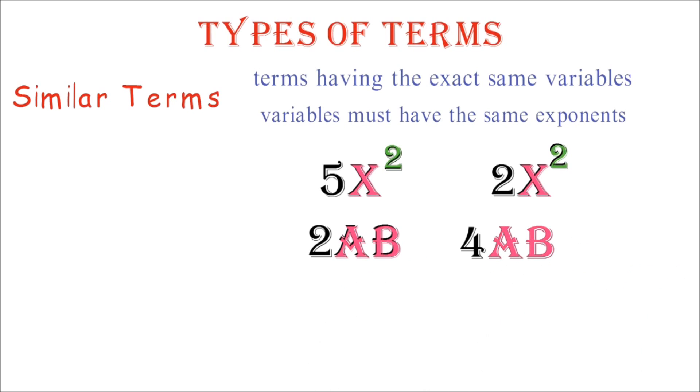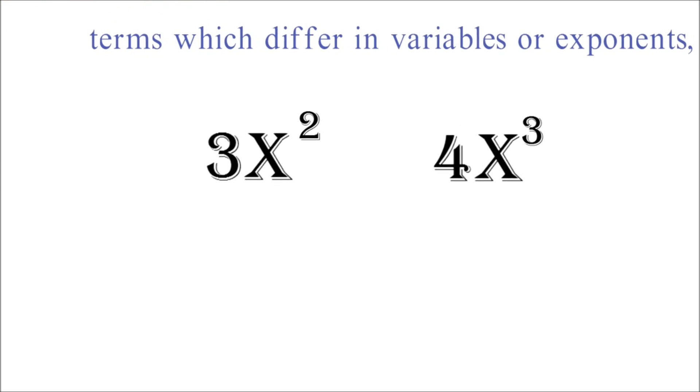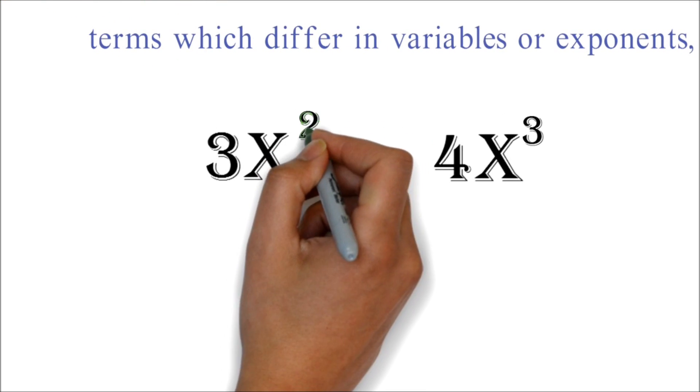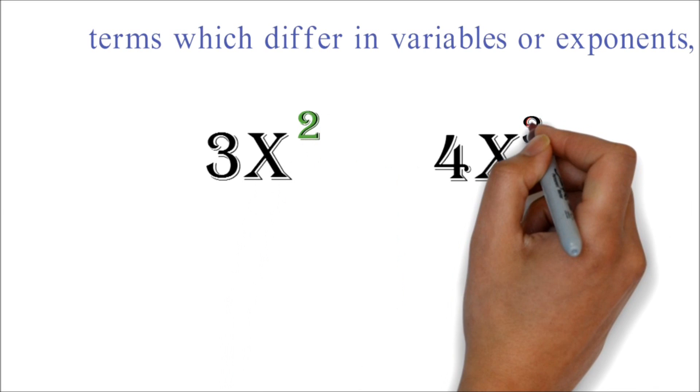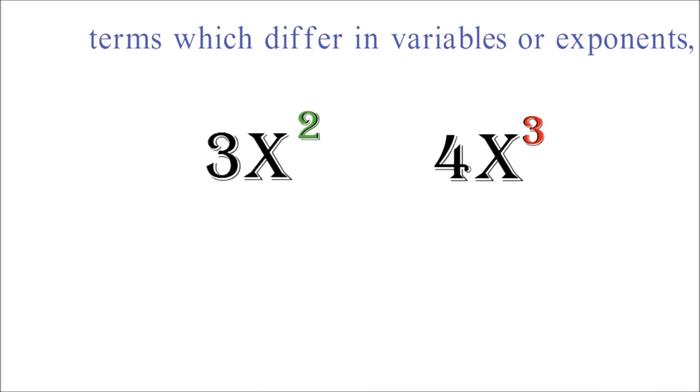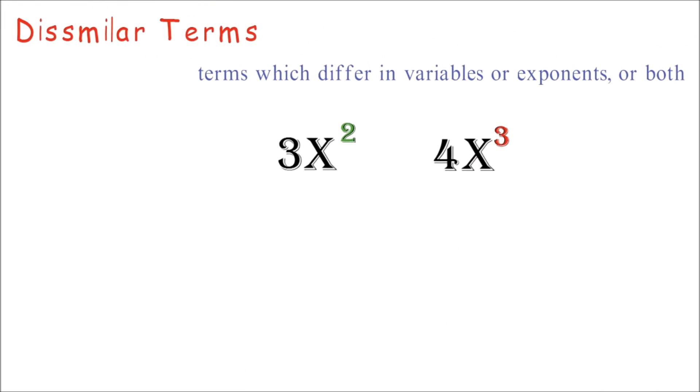Dissimilar terms are terms which differ in variables or exponents, or both. Example, we have 3x squared and 4x cubed. Here, both have the same variable x, but different exponents. One is squared and the other is cubed. Though they have the same variable, because they have different exponents, we say they are dissimilar terms.